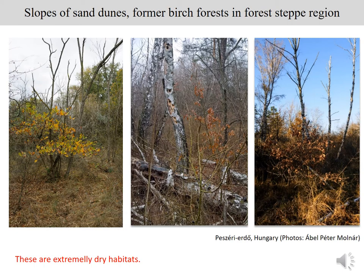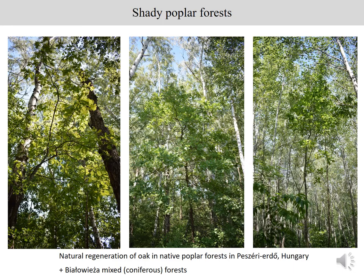During our field work, other contradictions appeared: even in very dry habitats, like slopes of sand dunes, oak can produce natural regeneration. These are light-rich but also extremely dry environments in a forest-steppe region, which contradicts the soil moisture hypothesis. We also observed that Quercus robur can develop a quite dense underlayer in a poplar forest in Hungary and in Italy too, which led us to question whether light is really the driving factor.